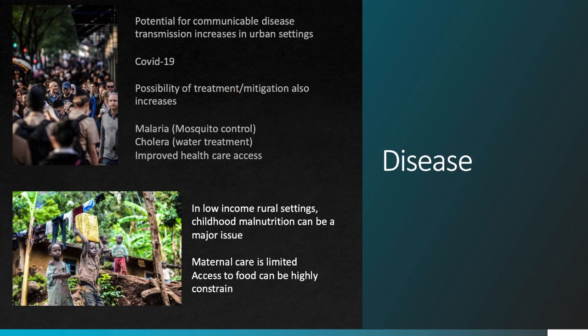Everyone now knows that urban centers change the way that disease moves through populations. As we've seen with COVID-19, the high population density of urban settings creates unique challenges to the prevention of disease and disease spread. However, these settings also have the possibility of improving mitigation measures to reduce disease transmission, and they typically have better treatment facilities than rural areas. Really common and serious diseases like malaria or cholera can actually be reduced in urban settings because of mitigation measures more easily deployed there. In some low-income rural settings, childhood malnutrition is a major issue, and basic health care — including maternal care — can be very limited or non-existent. So in these cases, urbanization at least offers the opportunity to address these issues.